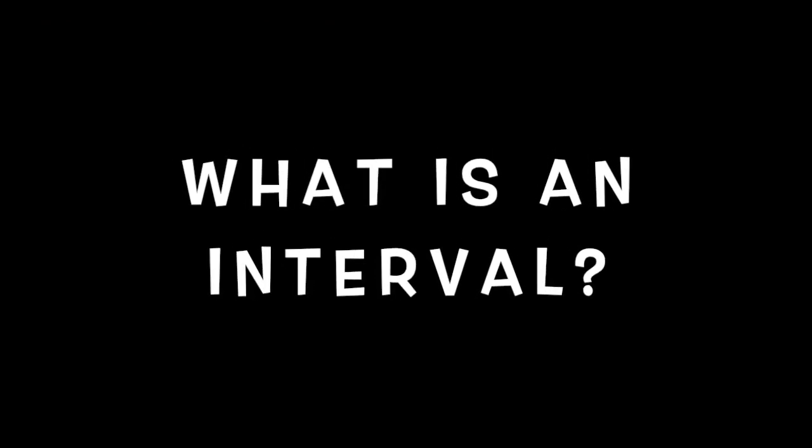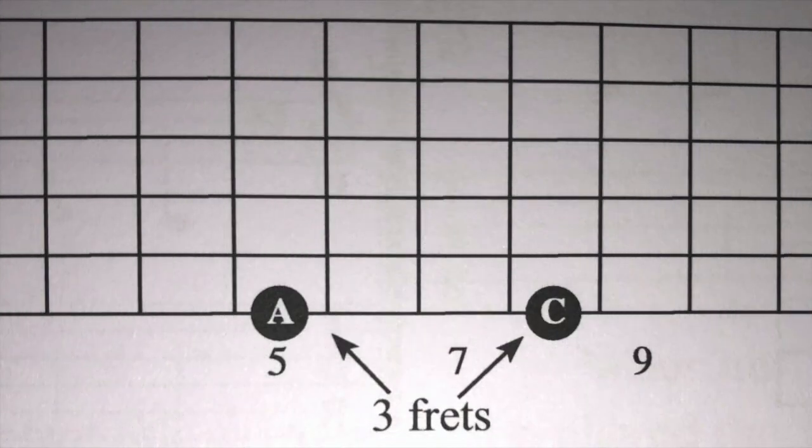An interval is the distance between two notes. The distance is usually measured from the lowest note to the highest note. Here is an example of this. Here we see on the fifth fret of the E string the note A, and on the eighth fret of the E string the note C. Between these notes there are three frets, which indicates an interval. We can see this clearly on the diagram.